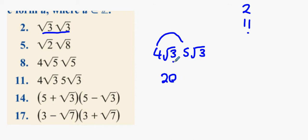I'm going to pair up the root 3 with the other root 3, and we're multiplying. And what do we get? Just root 9, which is 3. 20 times 3, 60. Anybody got any questions so far? Good.